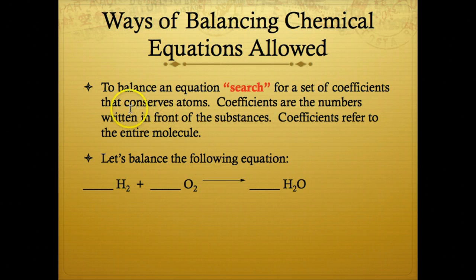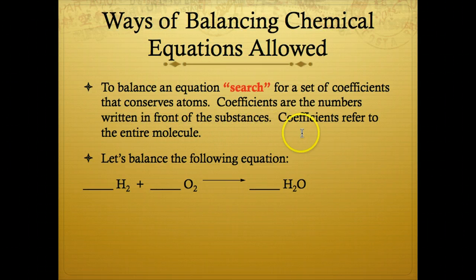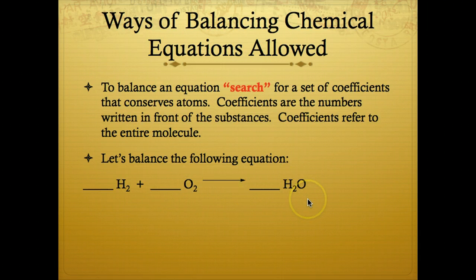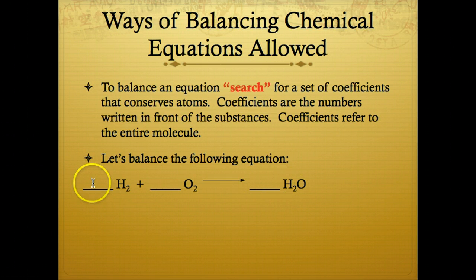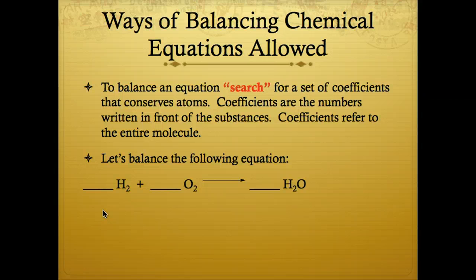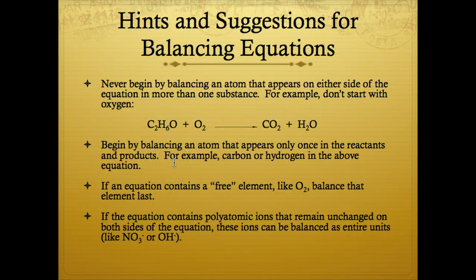What is allowed in balancing equations: search for a set of coefficients that conserves the atoms. Coefficients are the numbers written in front of the substances and refer to the entire molecule. So to balance H₂ + O₂ → H₂O, if we put a 2 in front of H₂O, we have two oxygens to balance the two oxygens on the left — but now we have four hydrogens. So we put a 2 in front of H₂ as well. Balancing equations is an art rather than a science; you get good at it by doing examples. We're going to continue with part two of this lecture on the second podcast for writing and balancing chemical equations.